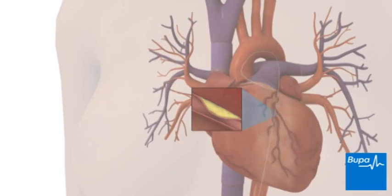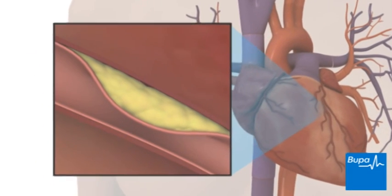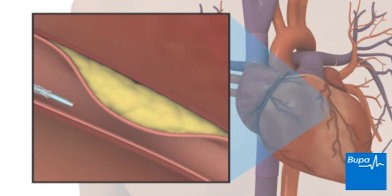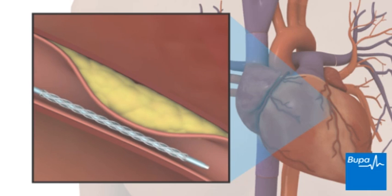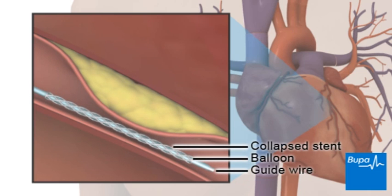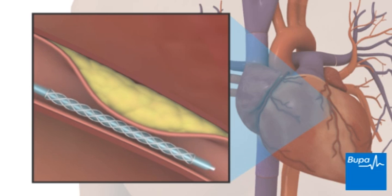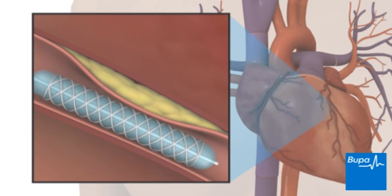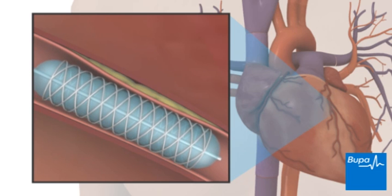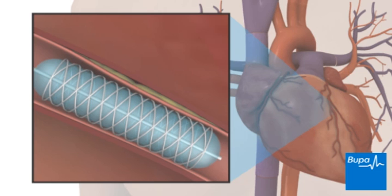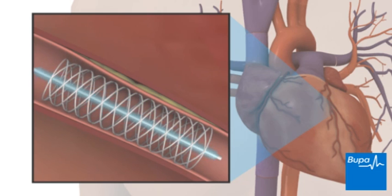A guide wire with a deflated balloon and stent at the tip is passed through the catheter. When the guide wire reaches the narrowed section of your artery, the balloon will inflate to open up the artery and the stent. The stent is left in place to keep the artery open and the balloon is deflated and removed.